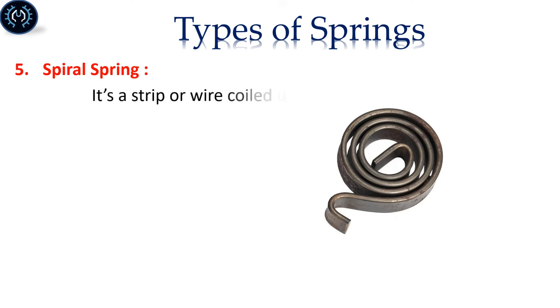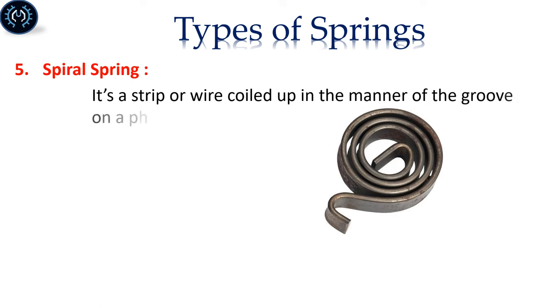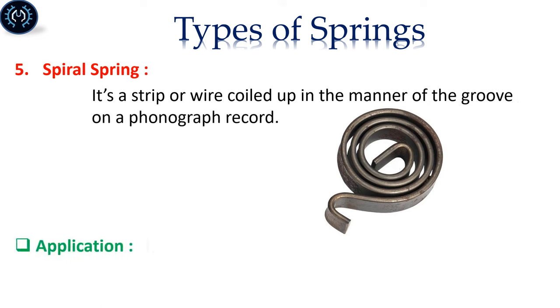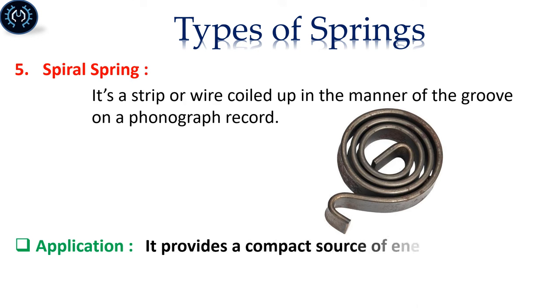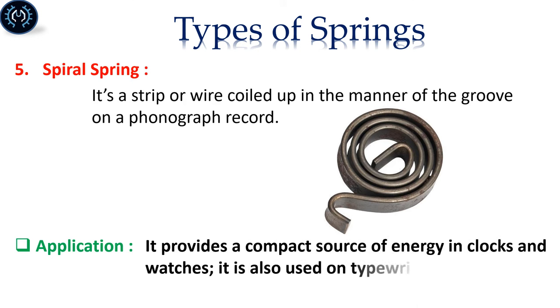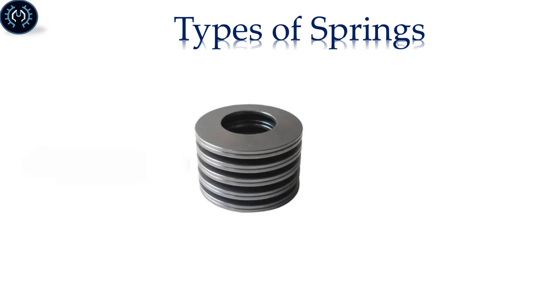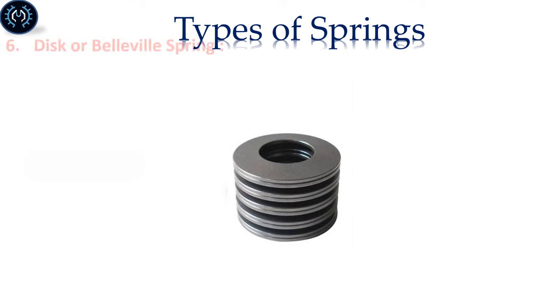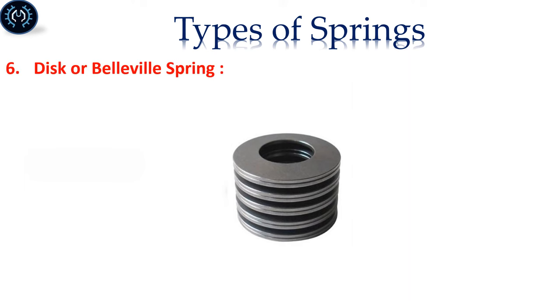Flat or Spiral Spring: It's a strip or wire coiled up in the manner of the groove on a phonograph record. It provides a compact source of energy in clocks and watches, and is also used on typewriters and parking meters.